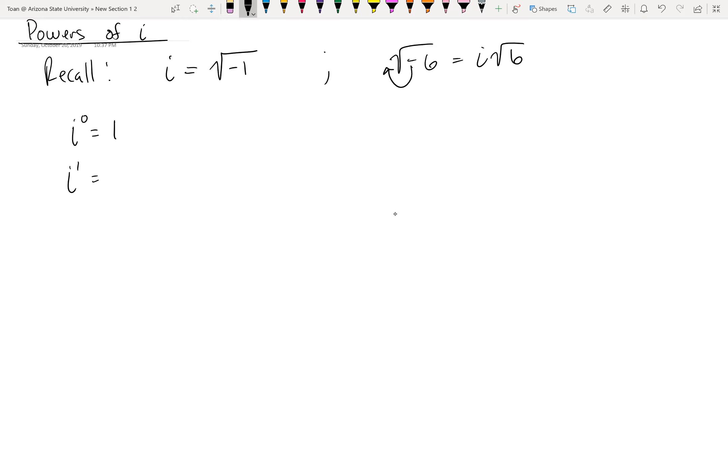I to the first power, we should know that anything to the first power is itself, so that's I. What about I squared? So I'm going to do some scratch work here. But we already know that I squared should be negative 1, but let's prove it. If I is square root of negative 1, then I squared should be the square root of negative 1 squared. And of course, the square and the square root will cancel, giving us a negative 1.